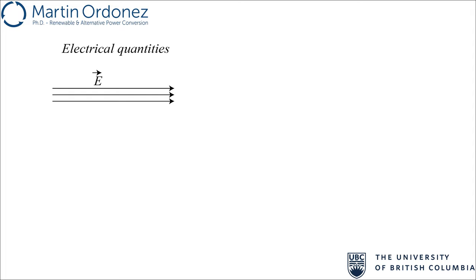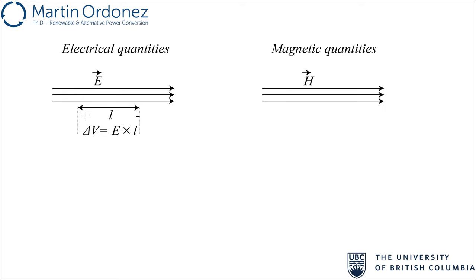Let's start with electric field intensity, shown with the letter E. For simplicity, let's assume a uniform and constant electric field. As you remember from physics, this electric field induces a voltage equal to E times L between two points at distance L. The equivalent of E field in magnetic domain is H field, called magnetic field intensity. Similar to E, H induces a scalar potential called magnetomotive force, or MMF, shown with the letter F. For a uniform and constant H, the induced MMF between two points at distance L is equal to H times L.